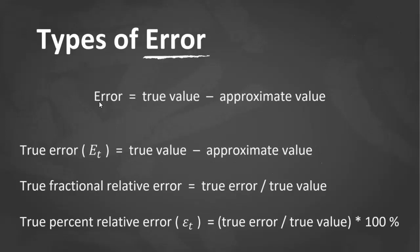Mathematically, error is just the true value minus the approximate value. With respect to the true value, error can be designated as true error (Et), true fractional relative error, and true percent relative error (εt). Notice that the equation shown has subscript t to indicate that the error is normalized to the true value.